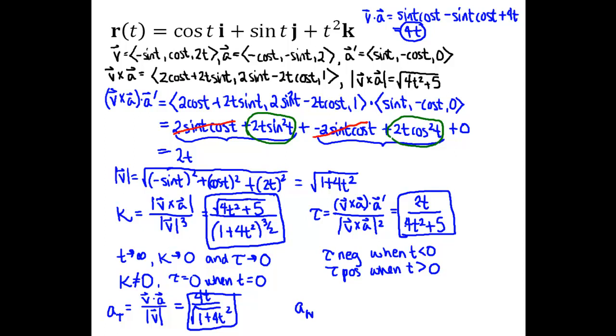And then the normal component of acceleration, depending on which formula you choose for that, we could either do some more calculations or we could notice that there's a formula that reuses a lot of the calculations we already did. Magnitude of V cross A divided by magnitude of V. We already have both of those. Magnitude of V cross A is square root of 4T squared plus 5, and magnitude of V is square root of 4T squared plus 1.